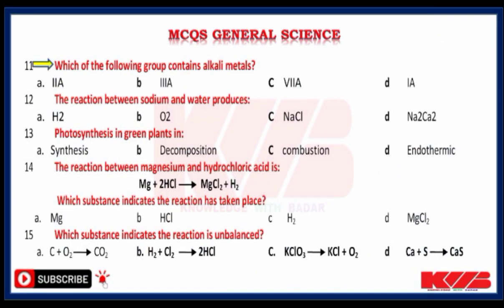Which one of the following groups contain alkali metals? 2a, 3a, 7a or 1a? Yes, 1a. The reaction between sodium and water produces — hydrogen, oxygen, sodium chloride, Na2, or Ca2? Yes, hydrogen.